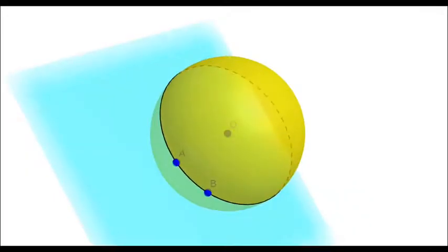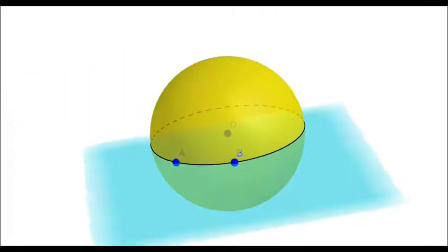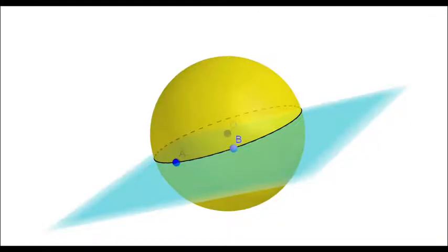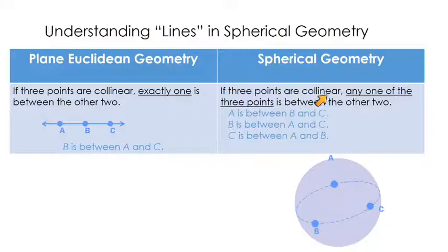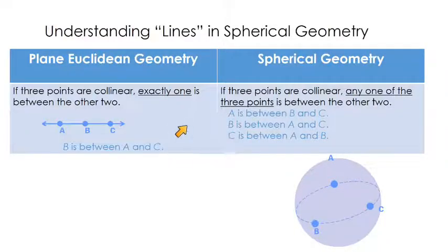Once you know that a line is the same thing as a great circle — think of it like an equator going around the widest part of the sphere — we can look at betweenness. In Euclidean geometry, if we have three collinear points, exactly one point is between the other two, so point B is between A and C. In spherical geometry that's not the case, because a line is a great circle. All three points could each be considered between the other two: A is between B and C, B is between A and C, and C is between A and B.